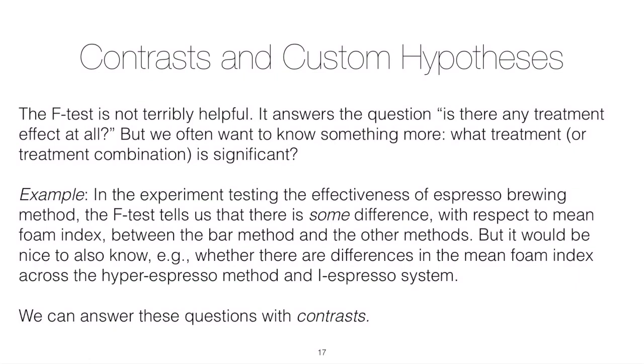One example: if you think back to the effectiveness of espresso brewing, the F-test told us that there's some difference with respect to the mean foam index between the bar method and the other methods. The bar method was sort of the control that was absorbed by the intercept term.